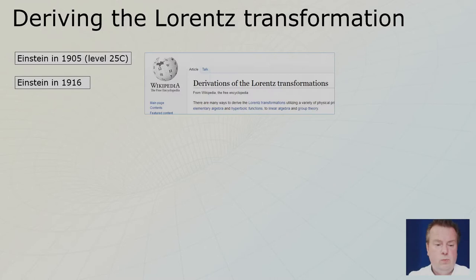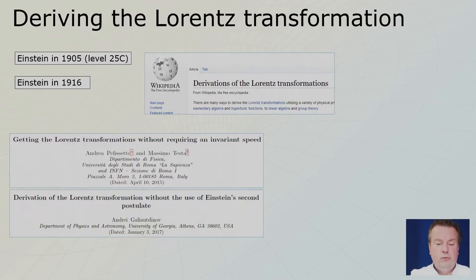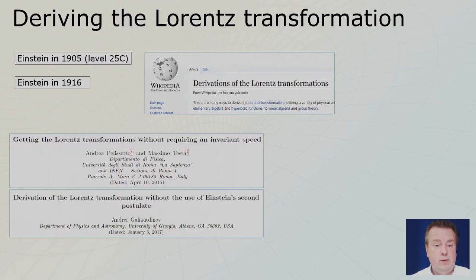If you go online and look at how Einstein derived the Lorentz transformation, you will almost always be redirected to the one he did in 1916, but the one in 1905 is the original. There's even a Wikipedia page on the derivations of the Lorentz transformation — so many are there. There are also some derivations without assuming the speed of light is the same for all observers. That intrigued me greatly and made me start this whole YouTube channel. That will be level 23 — my personal highlight of all 30 levels.